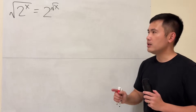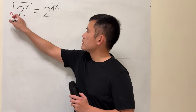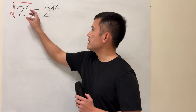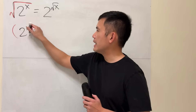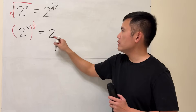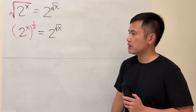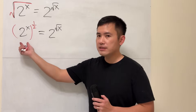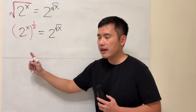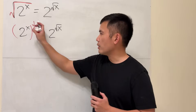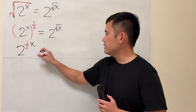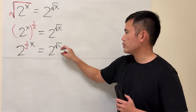Here is the deal. Let's take a look at this square root and put it as the one-half power. So the inside is still 2 to the x, but we raise that to the one-half power. That is equal to 2 raised to the power of the square root of x. On the left-hand side, we have 2 to the x, then to the one-half power. In this case, we can multiply the exponents, so we get 2 to the one-half times x, and this equals 2 to the square root of x.